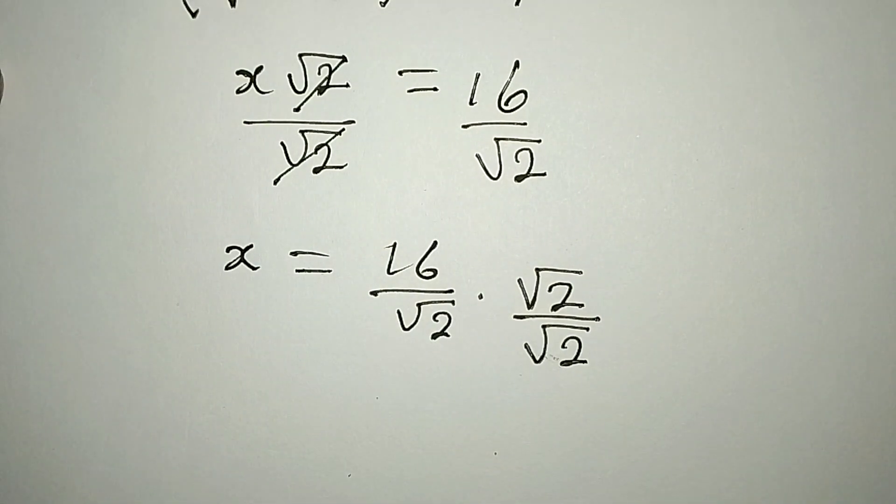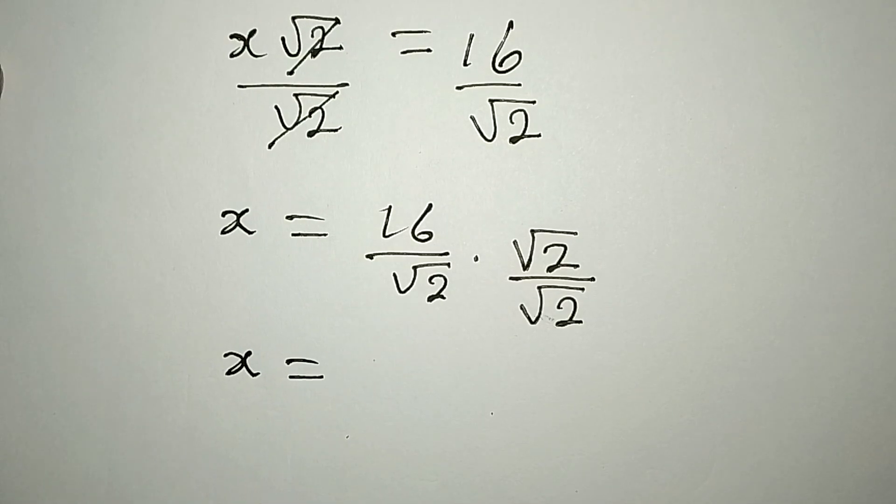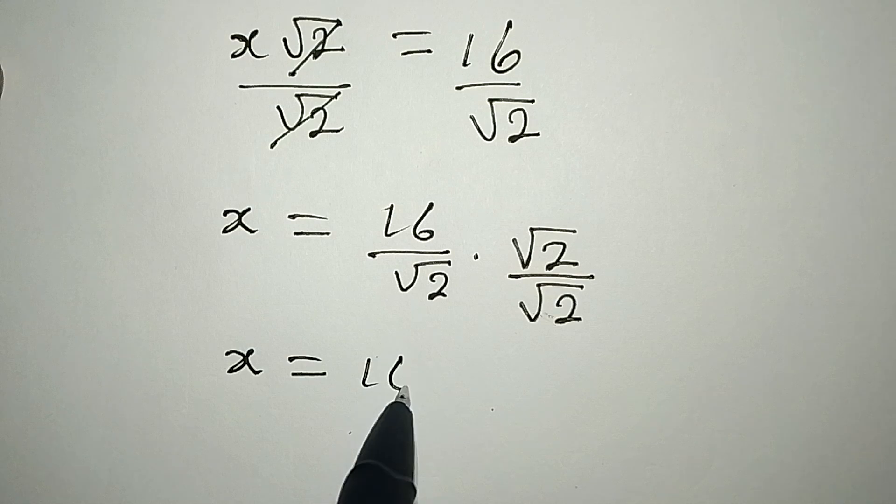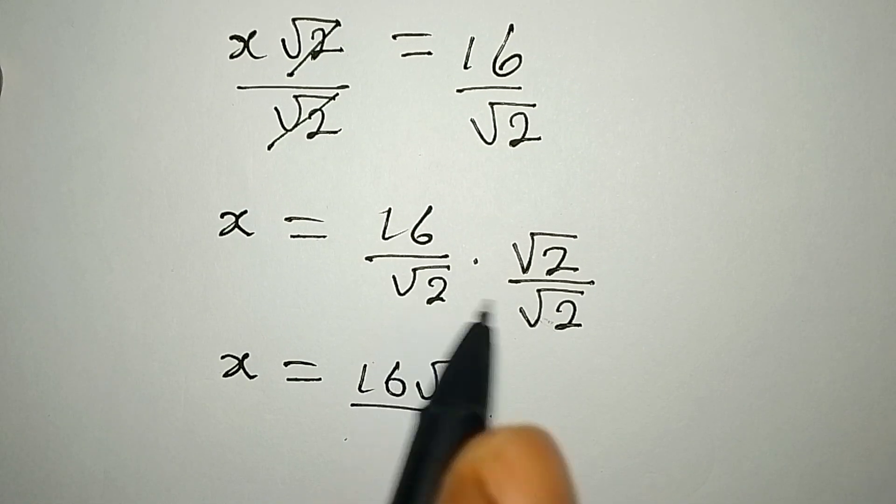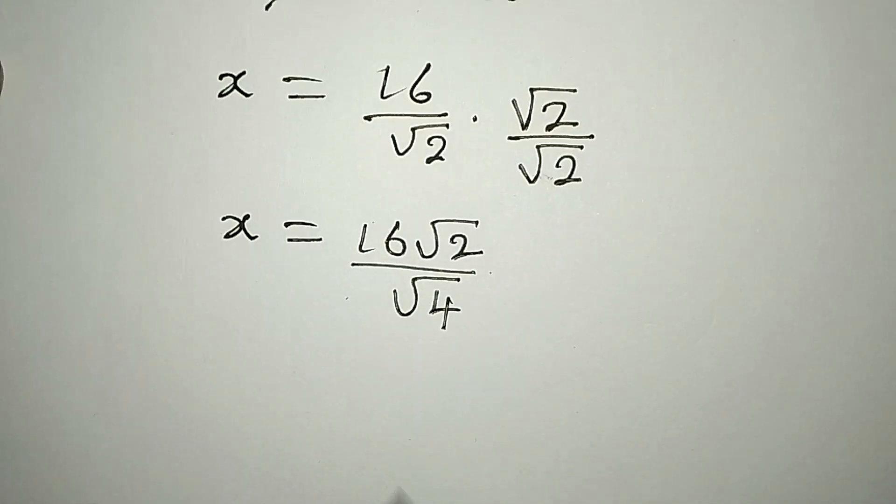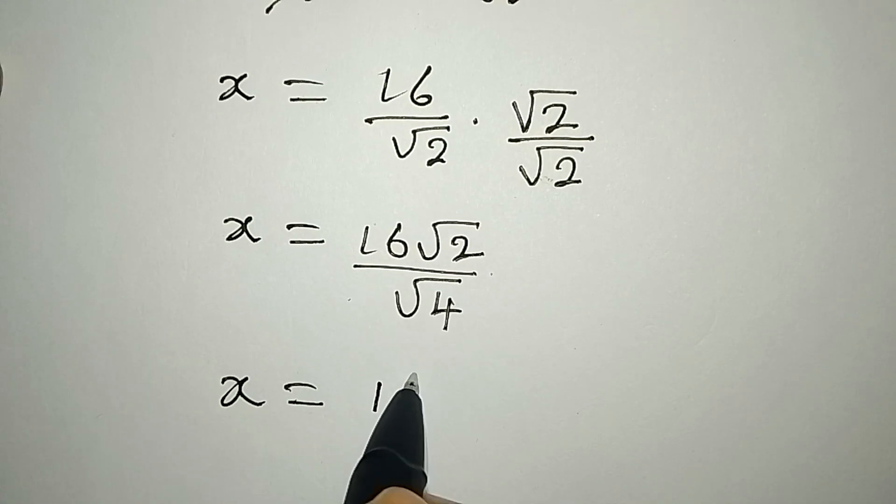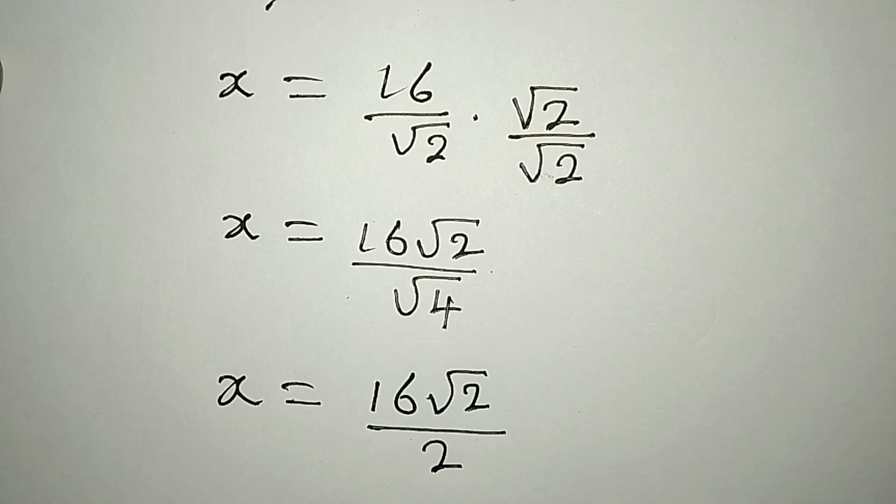So from here our x will now be equal to 16 multiplied by root 2, which will be 16 root 2. This is over root 2 times root 2, which will give us root 4. But then 4 is a perfect square, meaning that x is equal to 16 root 2 over 2, because square root of 4 is 2.